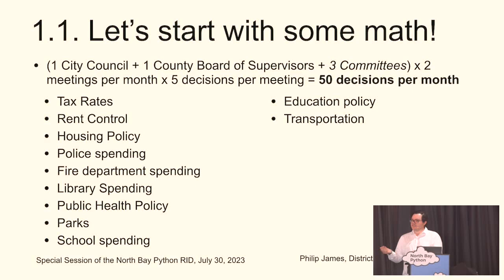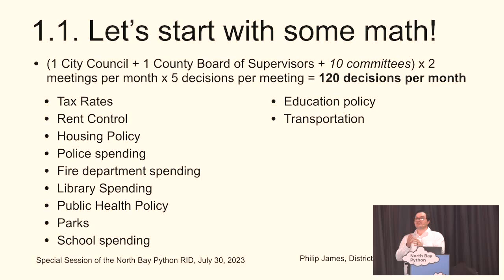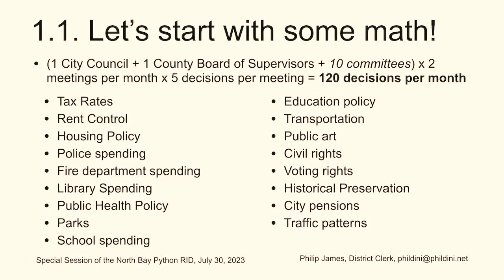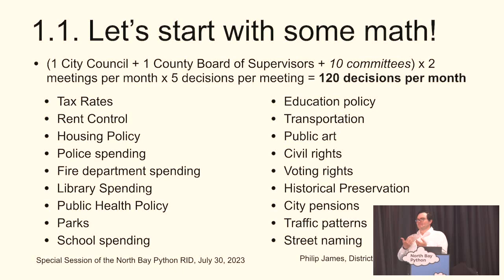Really, I'm sandbagging here. We're closer to most of these groups having around 10 committees. If it's 10 committees, we're now doing 120 decisions a month that affect your day-to-day life in ways you may not even be aware of — because now this is things like public art, civil rights, voting rights, historical preservation, city pensions, traffic patterns, street naming. If you don't see something that affects you on this list, please come talk to me, because I'd be very curious about where you live.